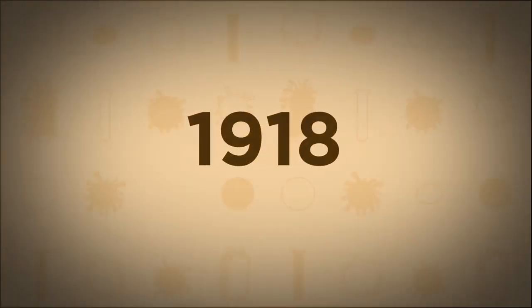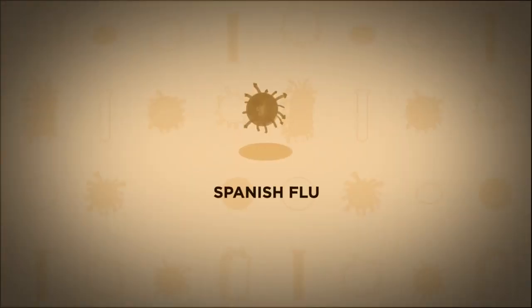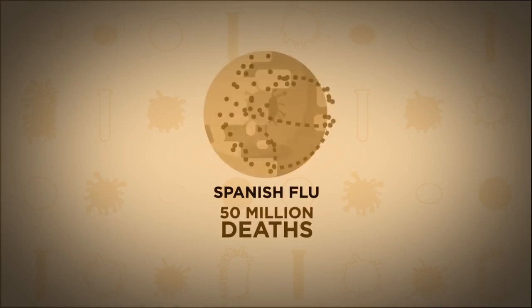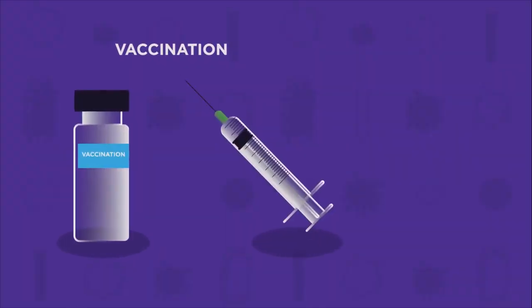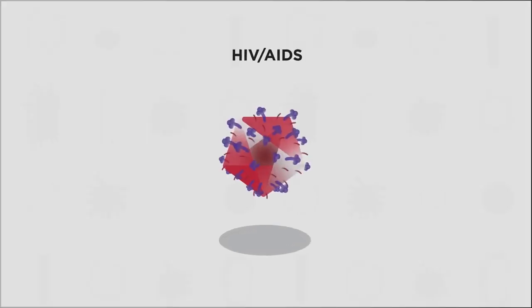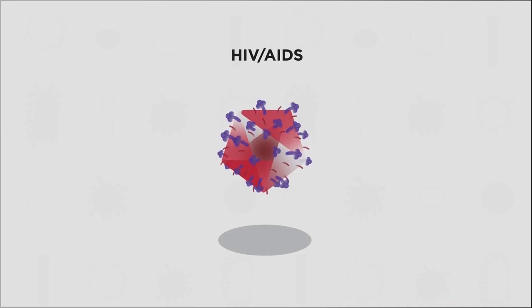In 1918, the Spanish flu is thought to have caused up to 50 million deaths worldwide. Scientists have developed vaccinations against lots of viruses, which have even led to the eradication of some viruses like smallpox as human hosts become immune. However, some viruses like HIV have proved impossible to develop any kind of vaccine for.